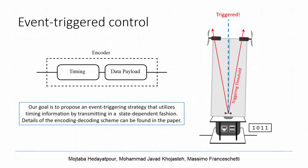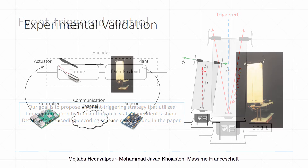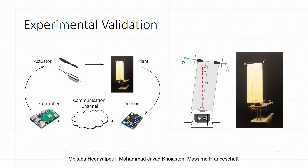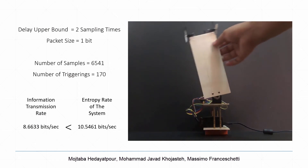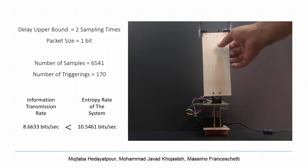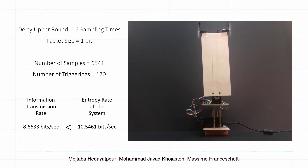Our goal is to propose an event-triggering strategy that utilizes timing information by transmitting in a state-dependent fashion. Details of the encoding-decoding scheme can be found in the paper. We present a set of experiments verifying the proposed control scheme using both timing information and data payload to stabilize an inverted pendulum over a digital channel with unknown bounded delay. In the first experiment, we set the channel delay upper bound to two sampling times, and the results show the information transmission rate — the rate at which the sensor transmits data payload — is less than the entropy rate of the system.